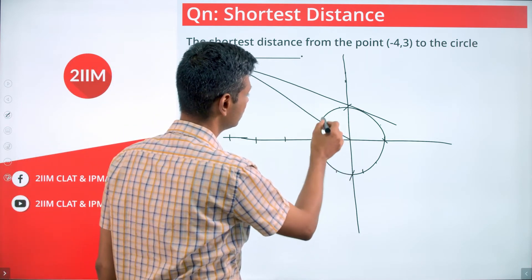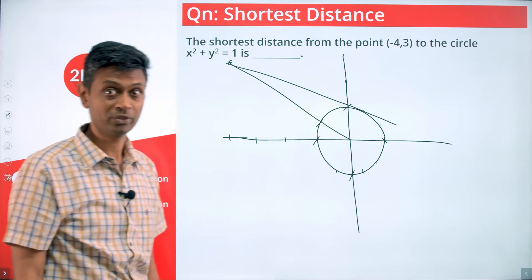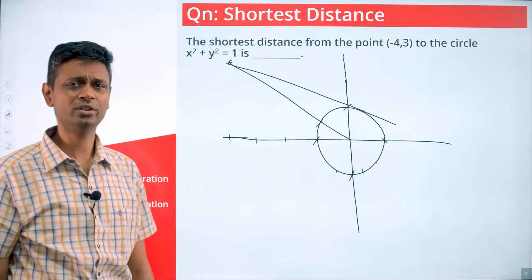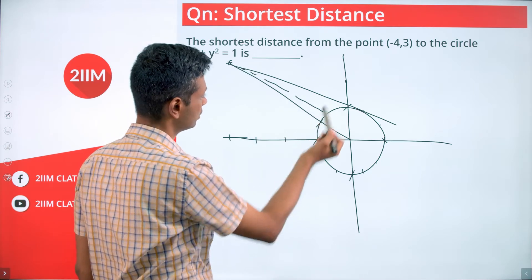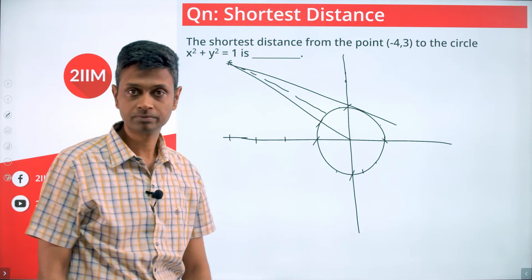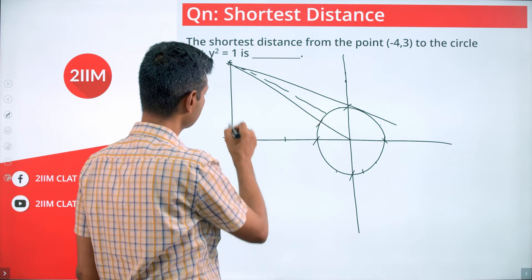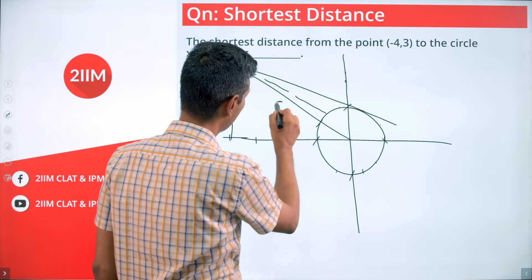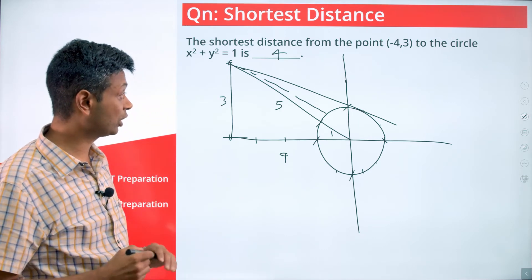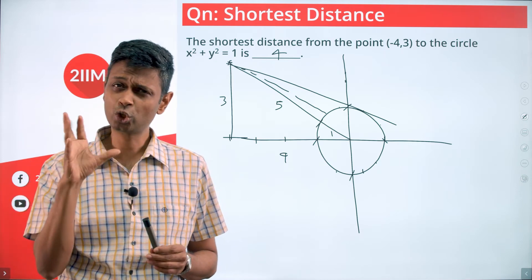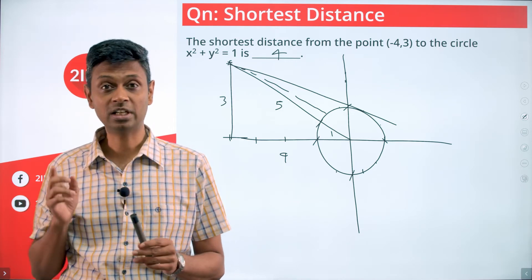Join this point to the center — that point is going to be the closest on the circle. Any other point will be farther. Think about it: the closest point on the circle is found by joining to the center. If you draw a point somewhere else, that distance will be longer. So join to the center, find where the line hits the circle — that is the closest point. From a point outside a circle, the shortest distance to the circle is along the line joining to the center.